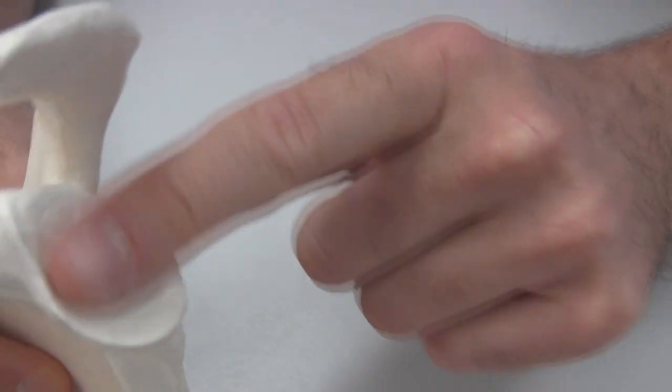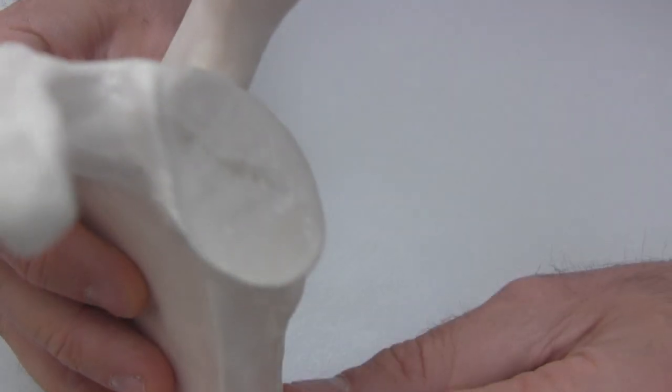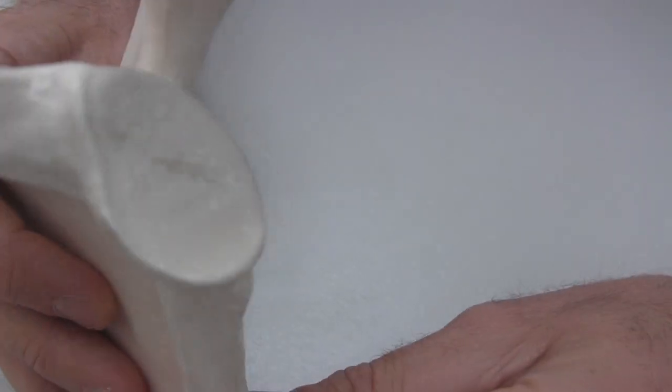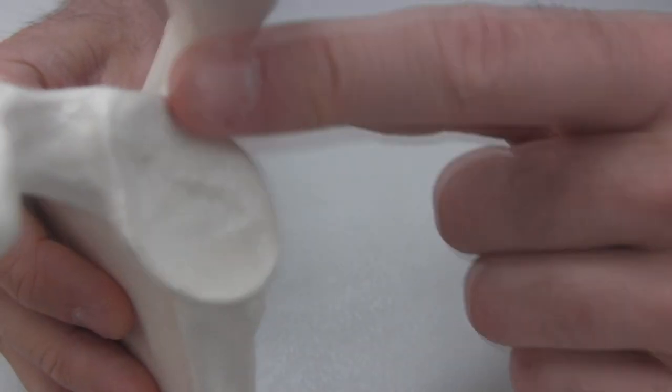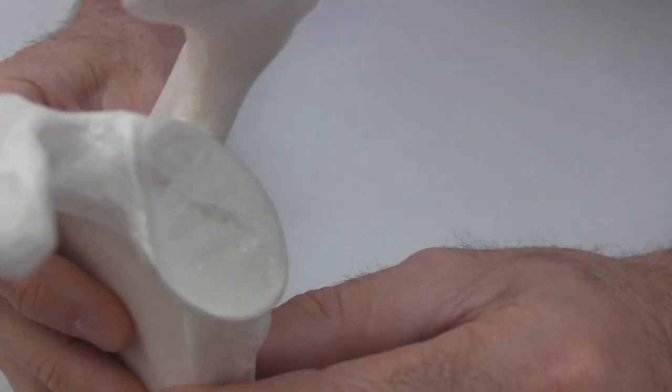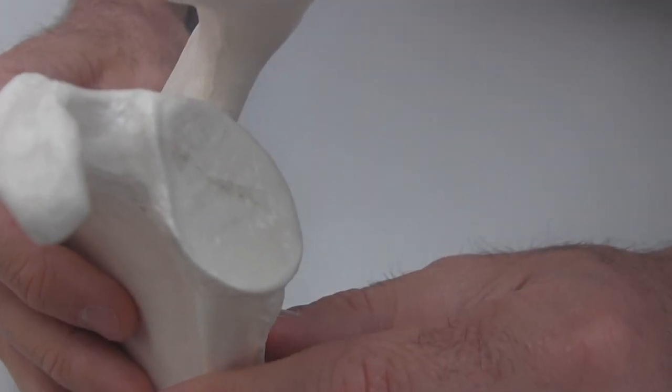Here we've got the actual socket part of the shoulder. This is called the glenoid cavity. The humerus head comes in here at the glenoid cavity, forming that ball and socket joint of the shoulder.